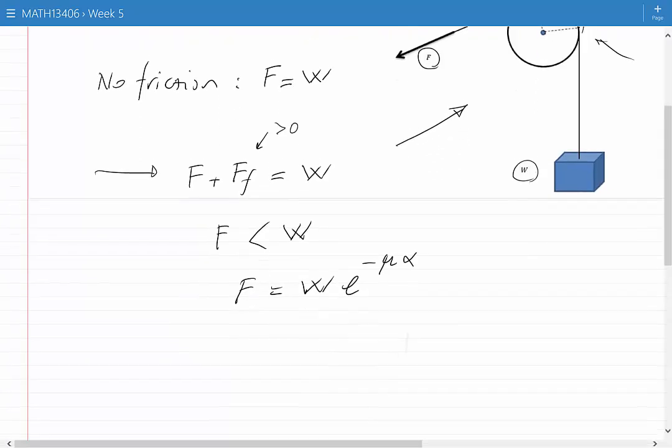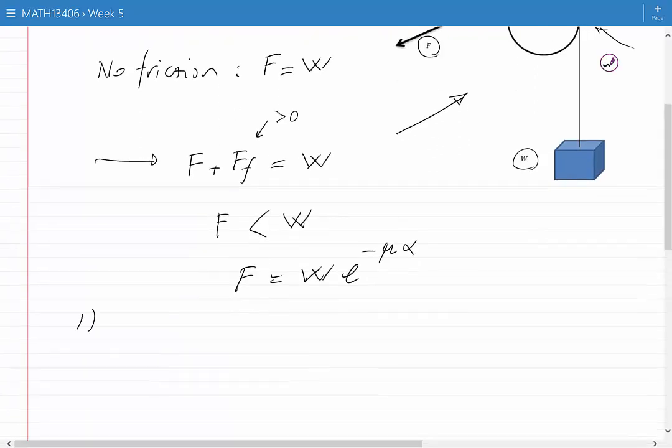As part one to this question, we would like to isolate alpha in terms of the rest of the variables. Now we treat the other variables as parameters and alpha as the unknown, and we try to isolate alpha.